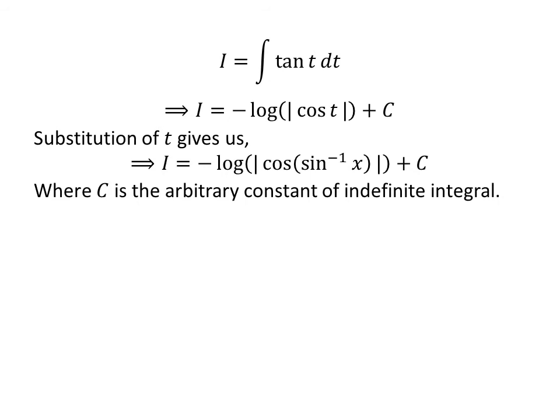We have solved the integration in terms of t. Now, we need to take back the expression in terms of x. For that, I have replaced t by arc sine of x which we had assumed earlier. So, i is equal to minus natural log of absolute value of cosine of arc sine of x plus capital C.